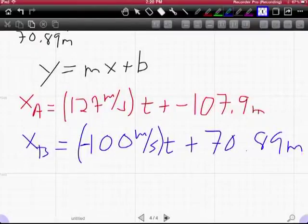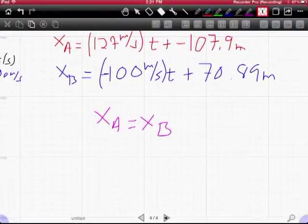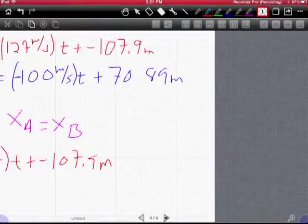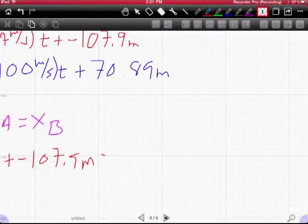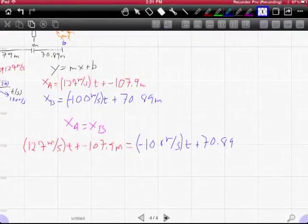So we're going to make an assumption here. We're going to either assume that at some point, the positions will be the same and solve for the time, or assume the times will be the same and solve for the position. The first method is going to be easier because the x is already by itself, as opposed to the time, which is buried. So I'm going to make an assumption here that the position of giraffe A at some point equals the position of giraffe B. I'm going to see if I'm right. So then I write my functions out like this. I do 127 meters per second t plus negative 107.9 meters equals negative 100 meters per second t plus 70.89. And from there, you could use some math and solve for t.